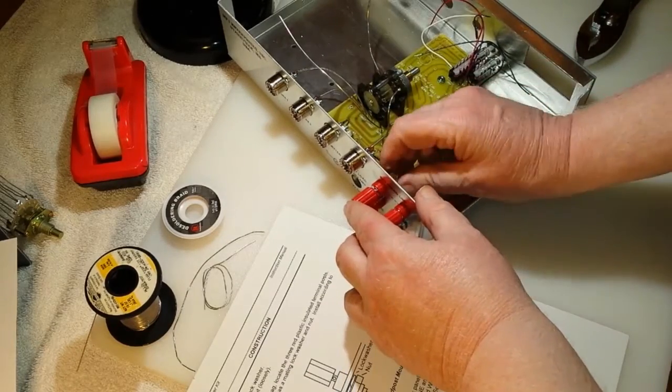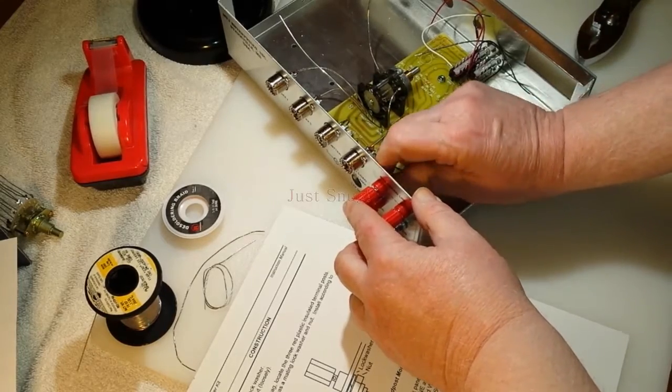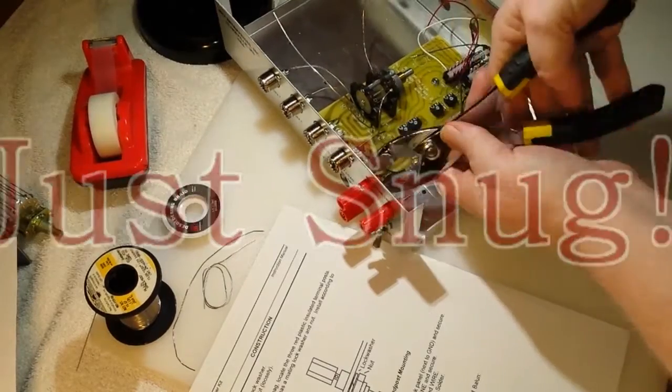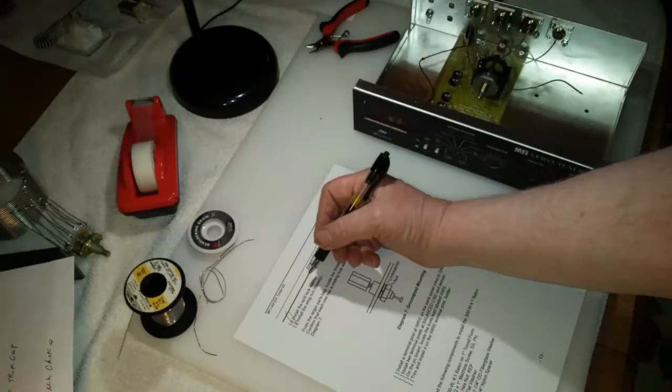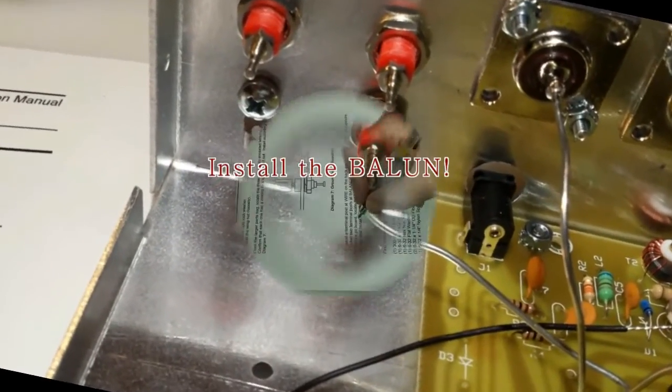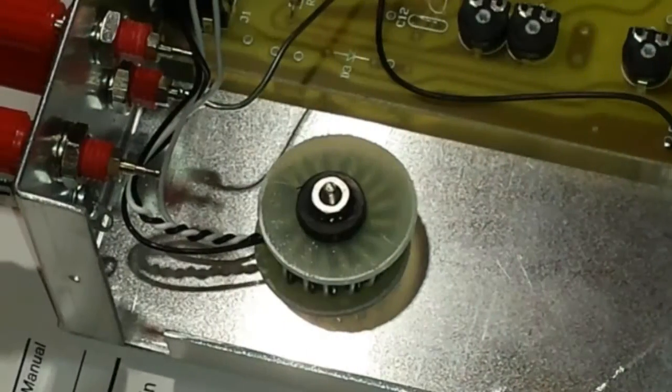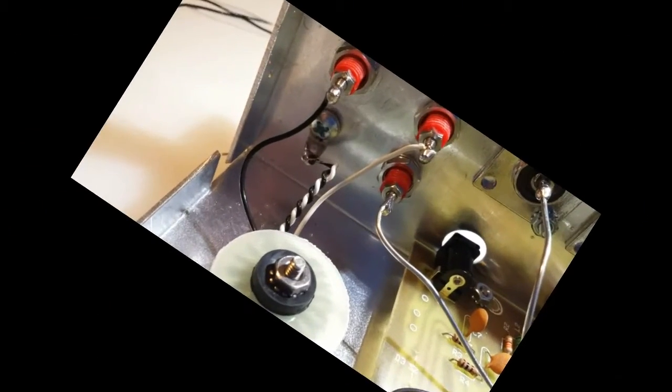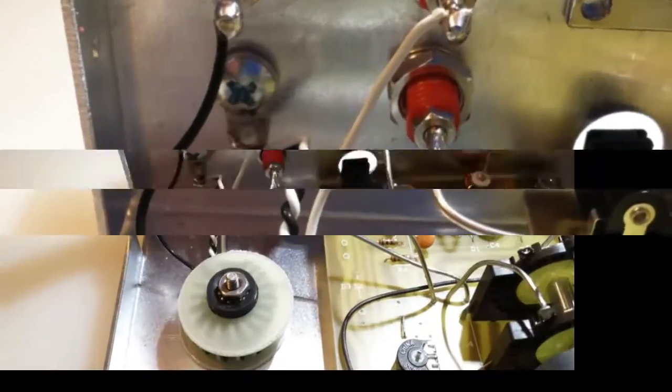Now when you put on the banana connectors on the back, the red ones, only snug those down. If you tighten that too much you're going to strip that plastic out. Then you're going to need to solder wire from the main board over to the bottom right banana plug connector there. That's the one that says wire on the back.